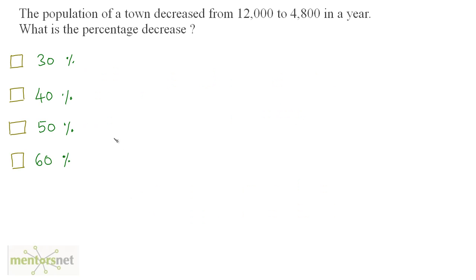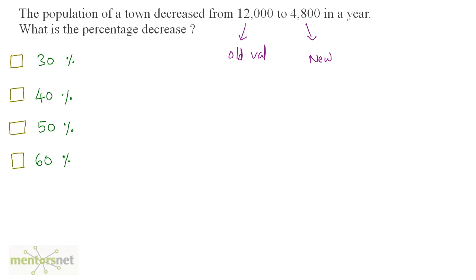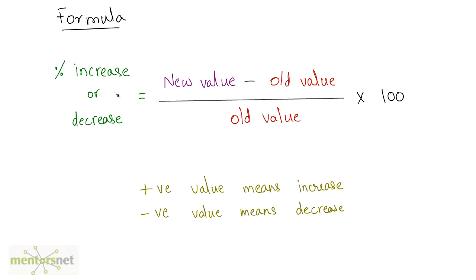Now let us solve this problem: the population of a town decreased from 12,000 to 4,800 in a year. What is the percentage decrease? The old value is 12,000 and the new value is 4,800. The formula is: percentage decrease equals new value minus old value, divided by old value, times 100.